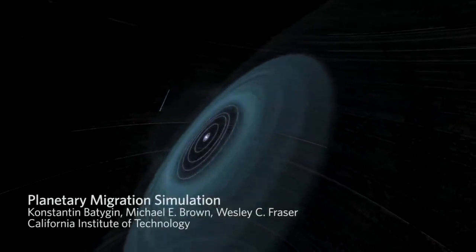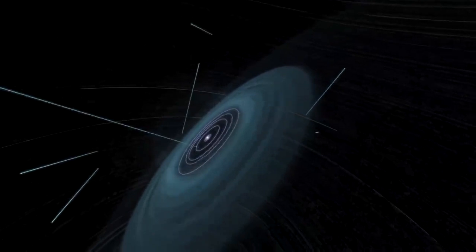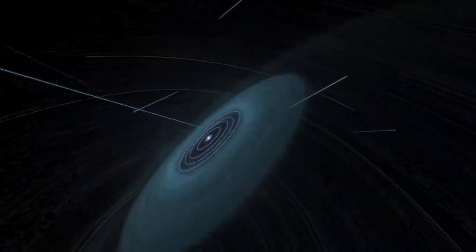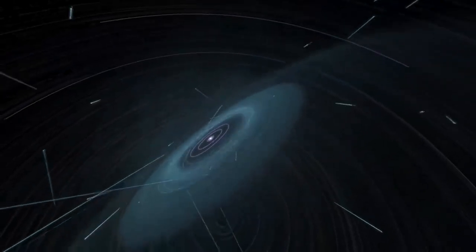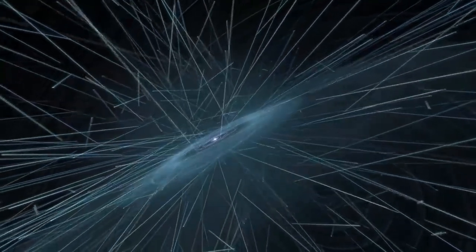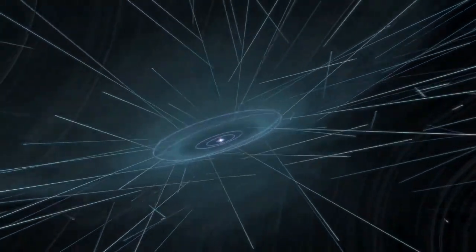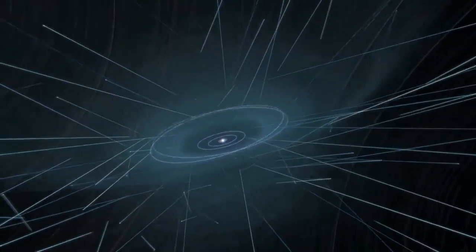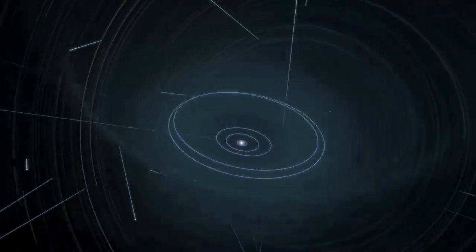Here's a computer simulation created by Caltech that illustrates this chaos. Planets interact with the rotating disk and lose momentum moving their orbits closer to the sun, or gain momentum increasing their orbital distance from the sun. Changing orbits create collisions between planets. Moons form and collide with each other, and with planets. Comets and asteroids form and smash into everything. But out of this chaos, we get our current order.